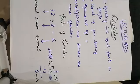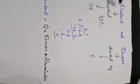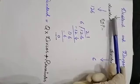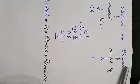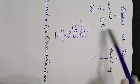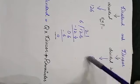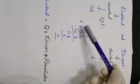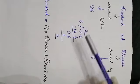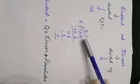Let me explain the difference between dividend and divisor. The dividend is the number that is being divided. The divisor is the number by which we divide. For example, consider 126 divided by 6: 126 is the dividend, 6 is the divisor, and 21 is the quotient.